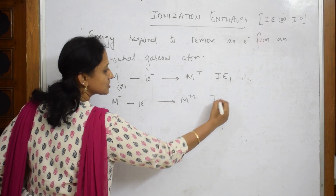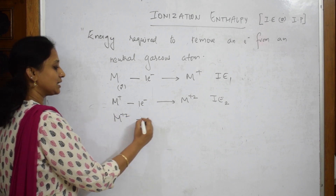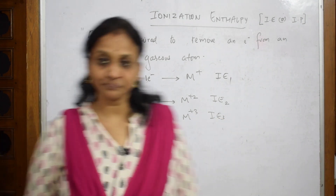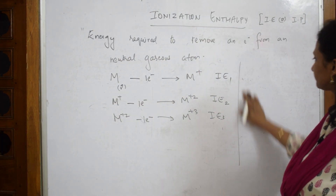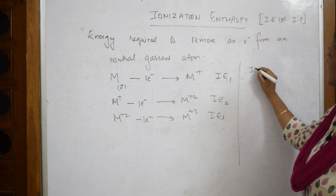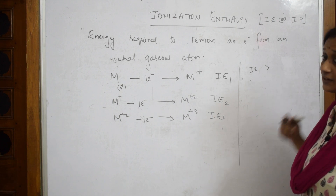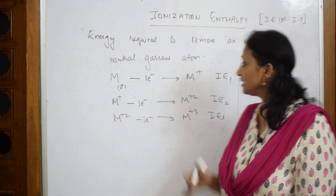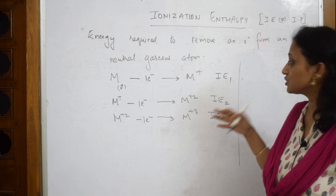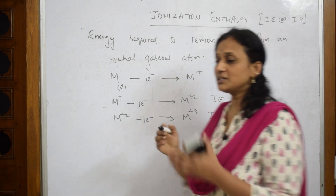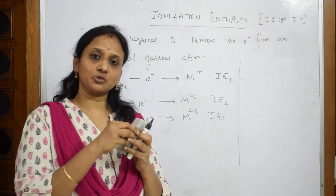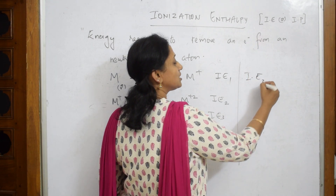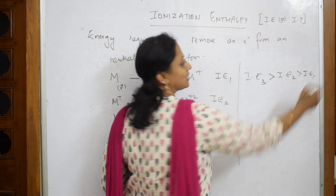Removing one more electron gives M³⁺, which is ionization energy 3, and it goes on like that. The trend is IE3 > IE2 > IE1, because more and more the ion becomes smaller, making it more difficult to remove the next electron.